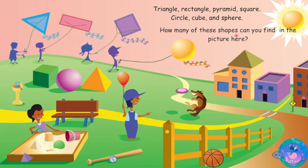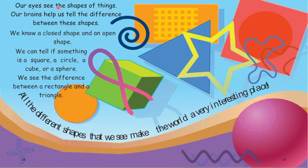How many of these shapes can you find in the picture here? Our eyes see the shapes of things and our brains help us tell the difference between each shape. We know a closed shape and an open shape. We can tell if something is a square, a circle, a cube, or a sphere. We see the difference between a rectangle and a triangle. All the different shapes that we see make the world a very interesting place.